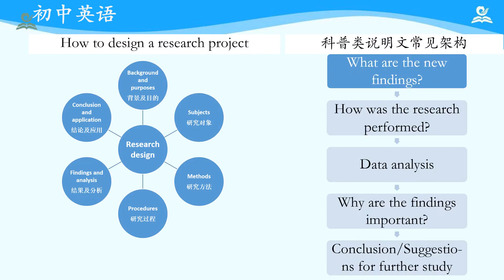做个小结。How to design a research project需要考虑的elements包括：Background and purpose背景和目的、Subjects研究对象、Methods研究方法、Procedures过程、Findings and Analysis、Conclusion and Application，有时候还有suggestions for further study。科普类说明文往往为了吸引读者，一开始就把研究结果呈现出来，从What are the new findings开始，然后探讨how，包括data analysis和importance/value/meaning，最后重述conclusion，提一些suggestions。